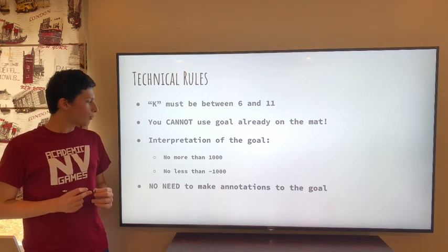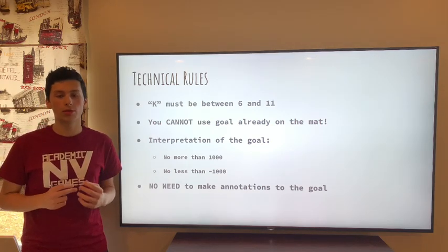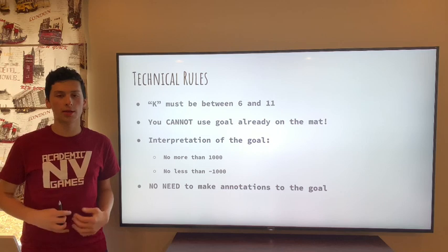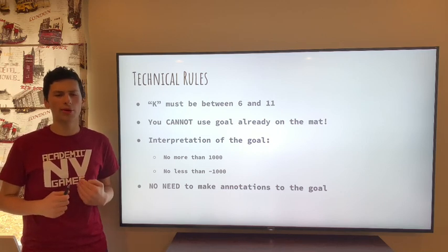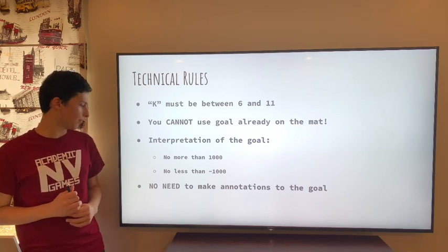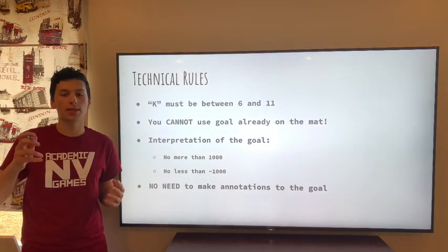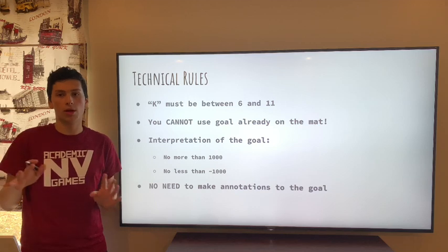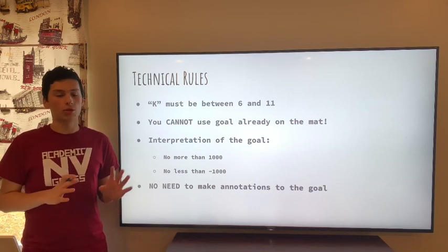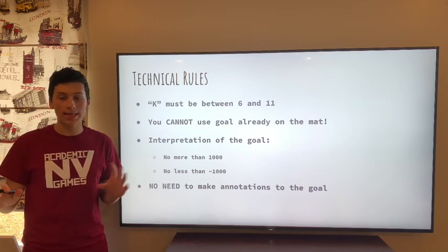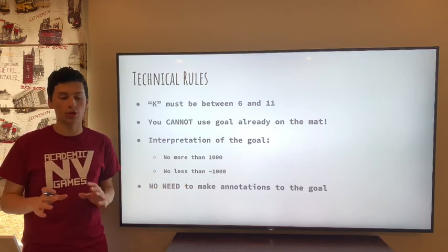And another rule is that you cannot have your interpretation of the goal be over 1000 or below a negative 1000. Although you probably won't ever be in that situation. And then finally, you do not have to make any annotations on your goal. You don't have to say k equals a below your solution or my interpretation is whatever. You need to always write the goal as it is from the mat onto your paper. Don't adjust it at all.